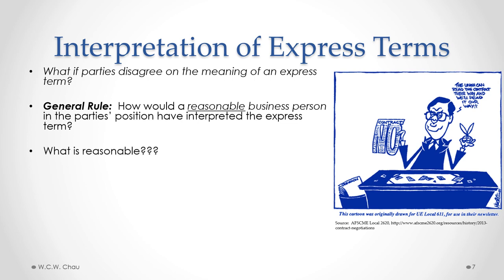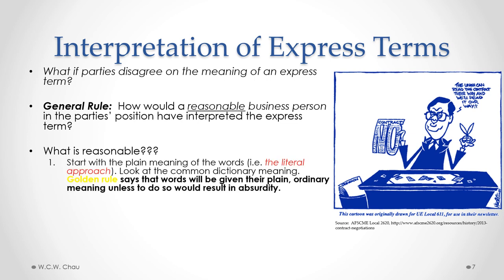The courts give us a bit more guidance through something called the Golden Rule. The Golden Rule says that we should start with the plain meaning of the words — that's called the literal approach. We look at the literal plain meaning of the actual words used in the contract, and to determine that plain meaning, the most obvious place to look is the dictionary — we look up the common meaning of a word as defined in the dictionary. The Golden Rule says we start with that plain ordinary meaning, but if applying it leads to an absurd result, then we need to look at some other different interpretive approaches beyond the literal approach.